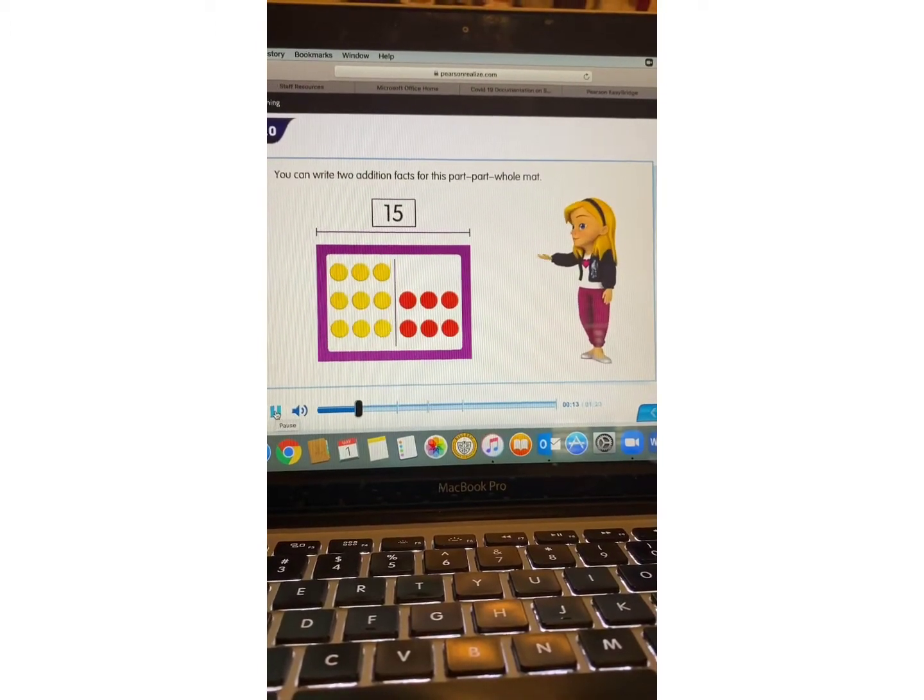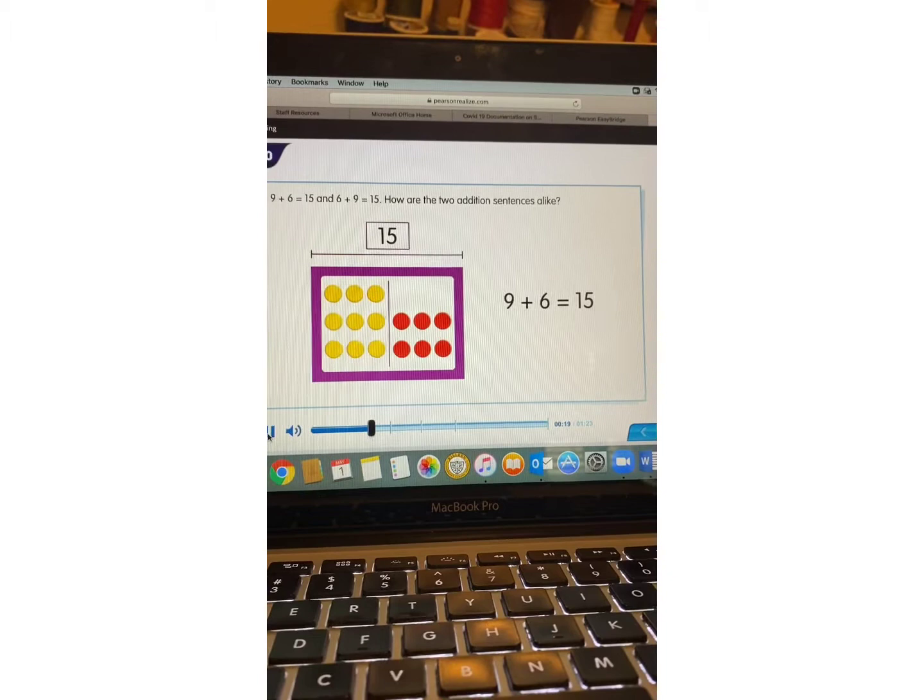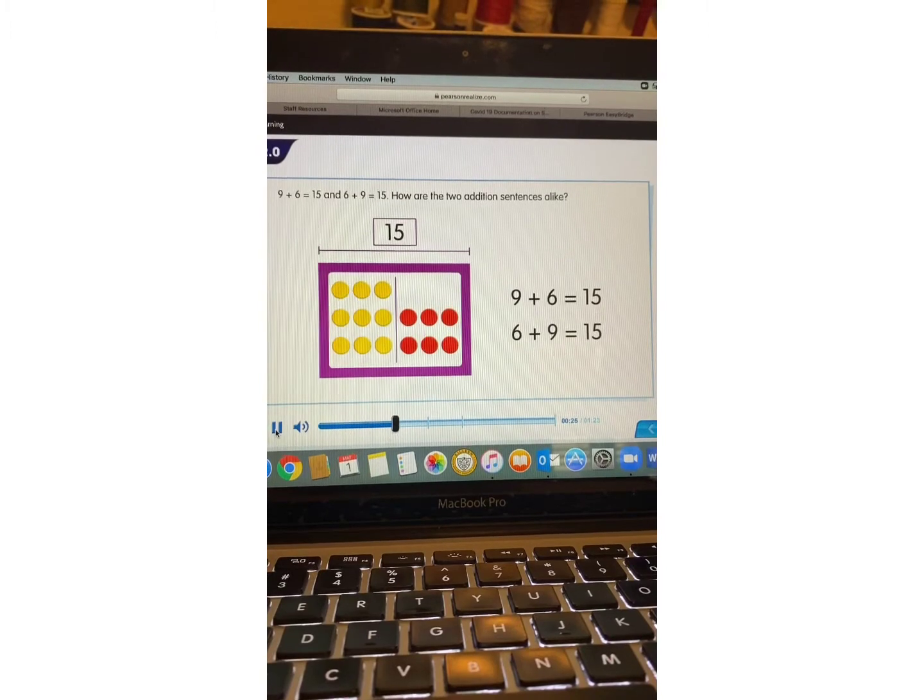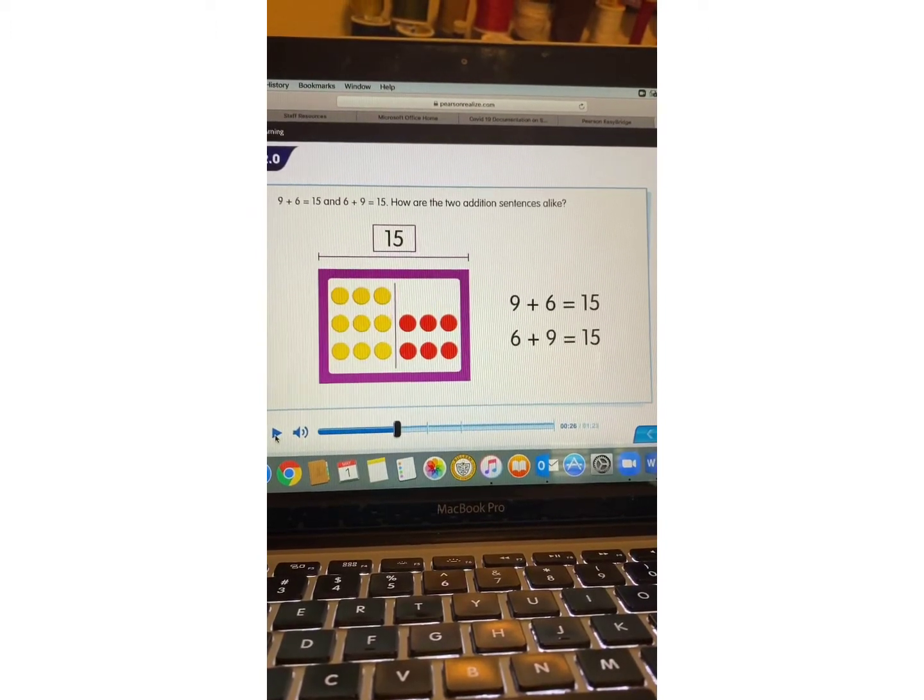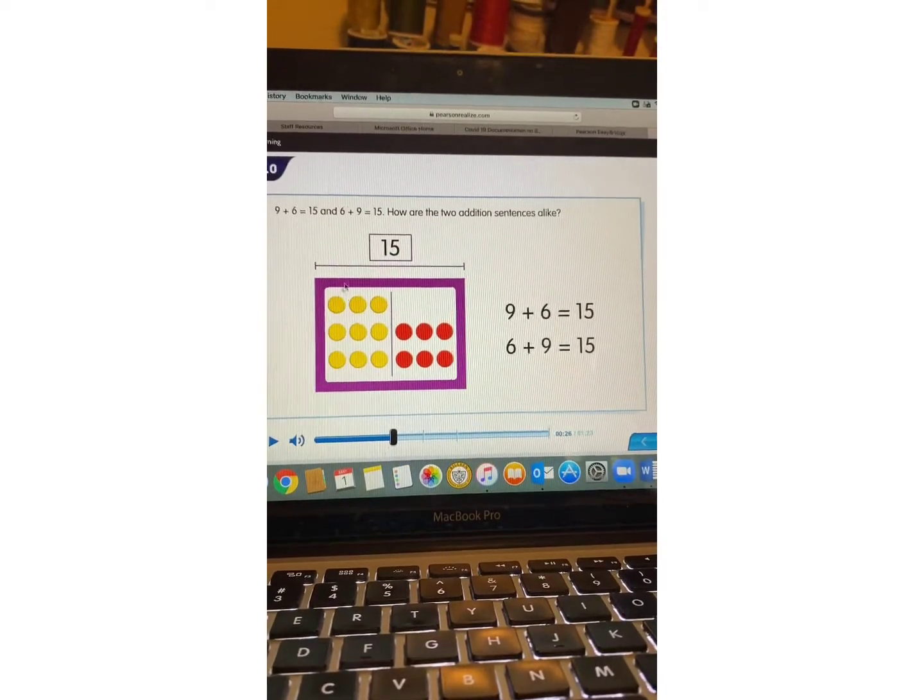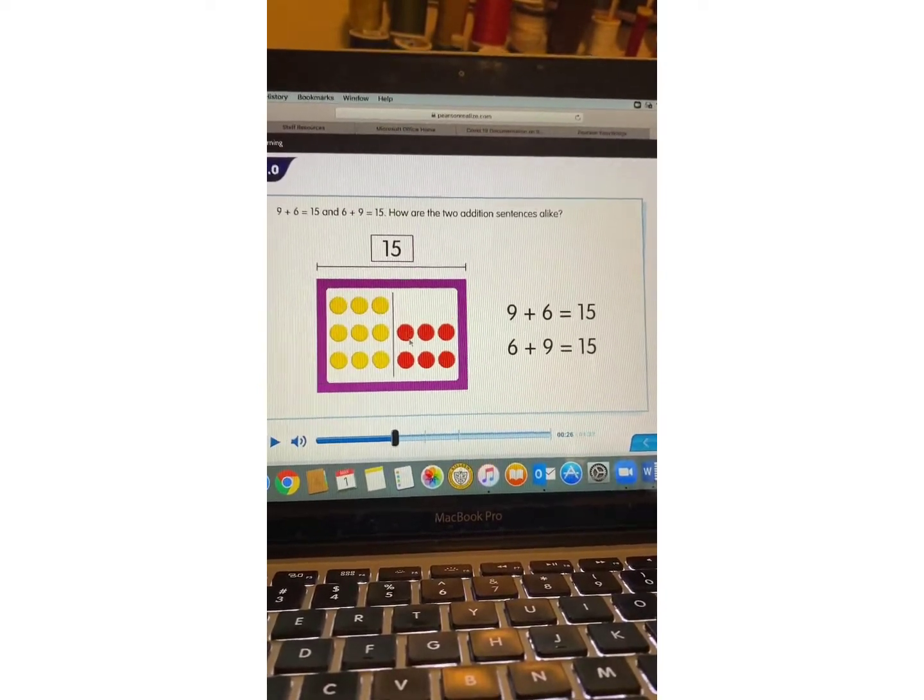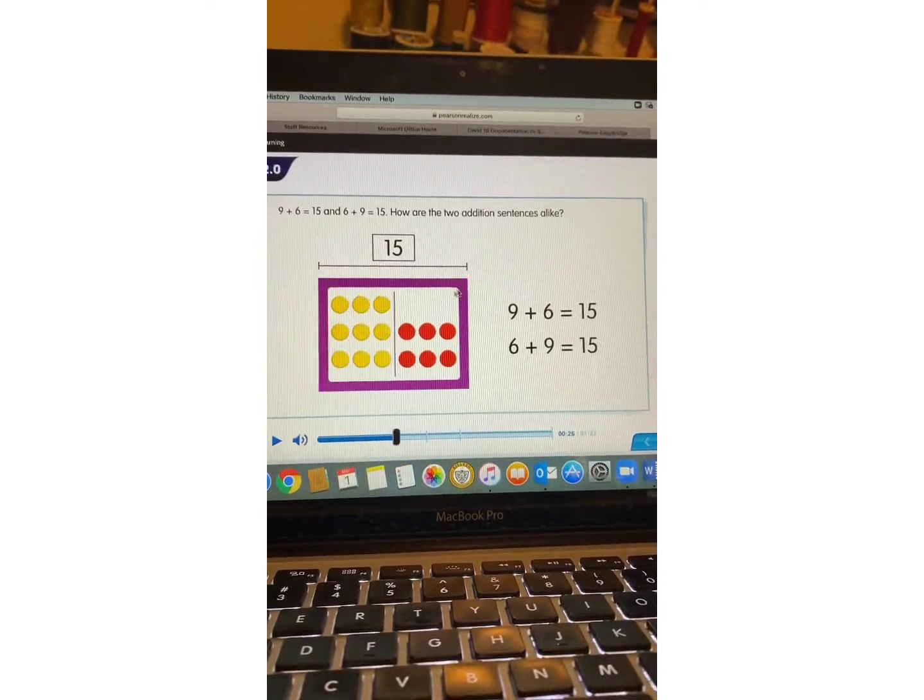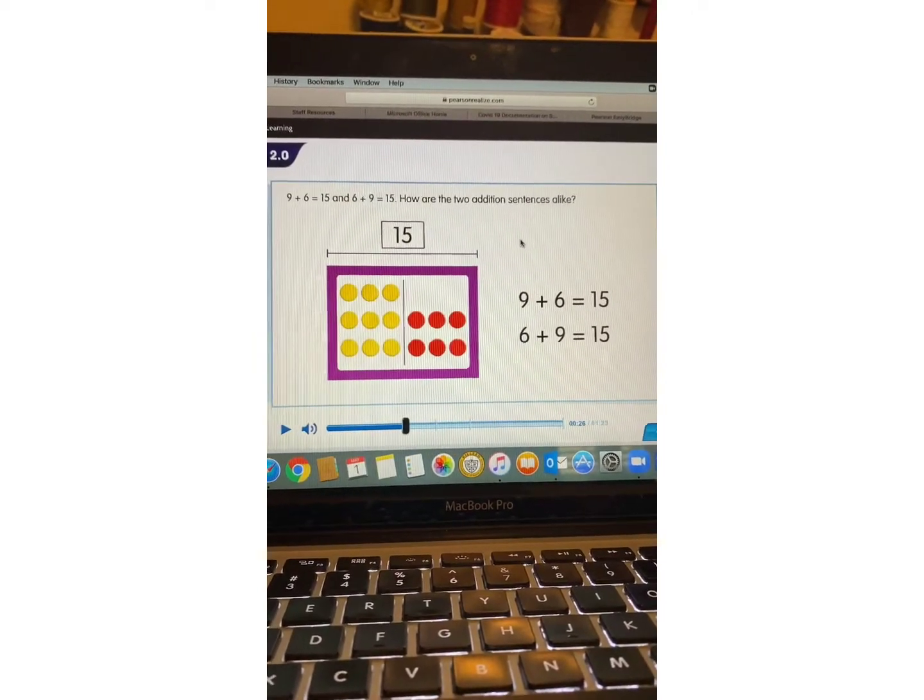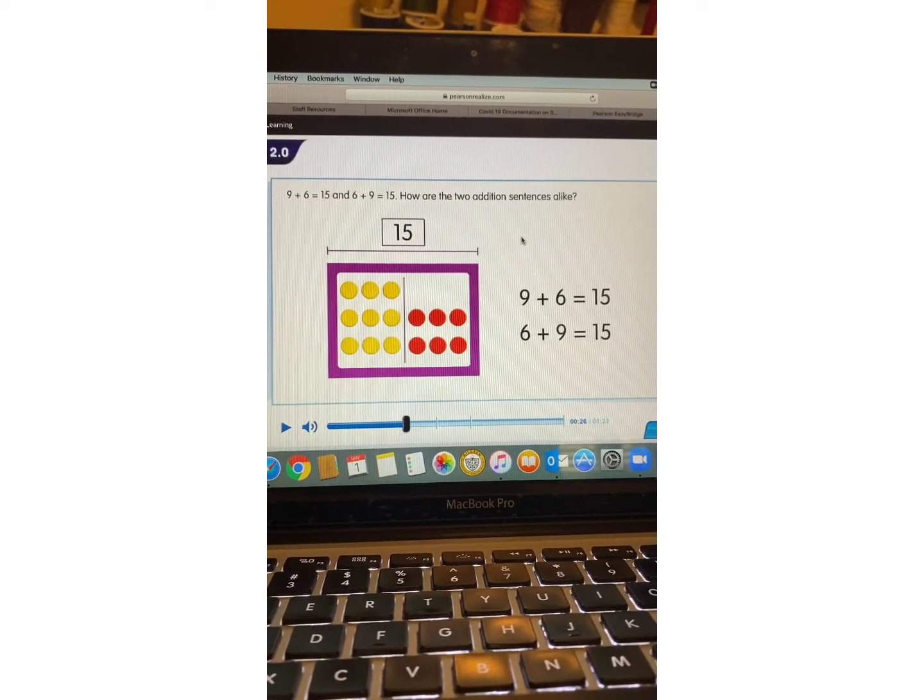You can write two addition facts for this part-part-whole mat. What addition fact can you write? Nine plus six equals 15. Here we have nine. Nine plus six equals 15. So here's part, part, whole. And six plus nine equals 15. How are the two addition sentences alike? What do you notice? What is the same? What's alike? What is something you've noticed?